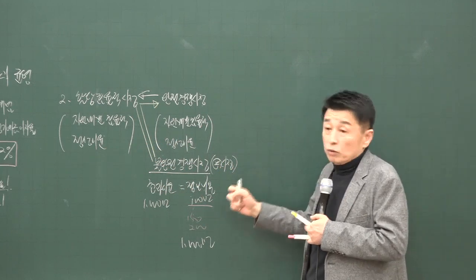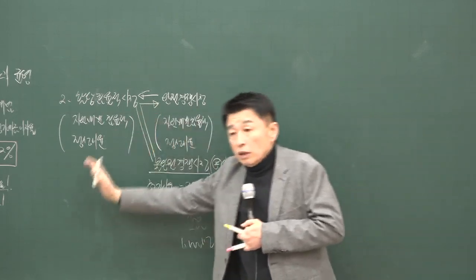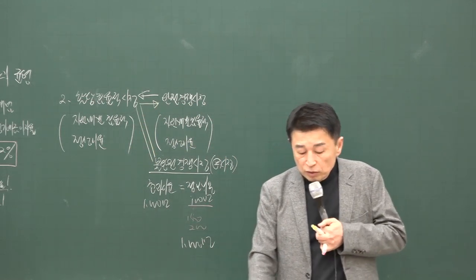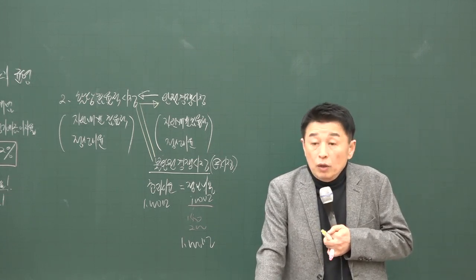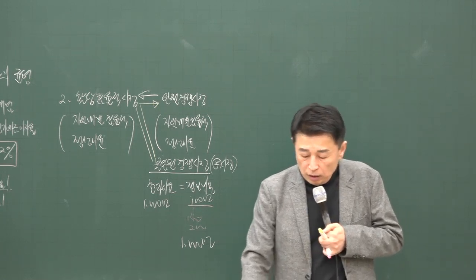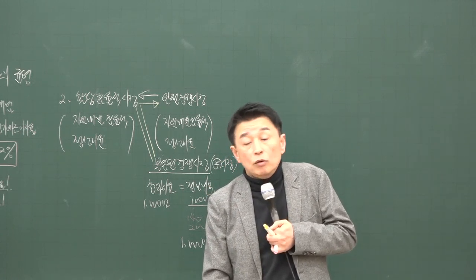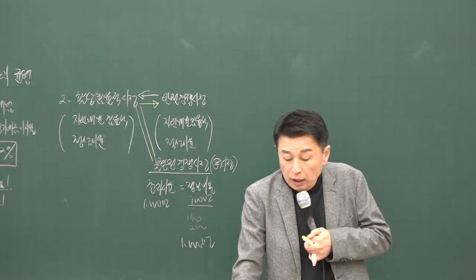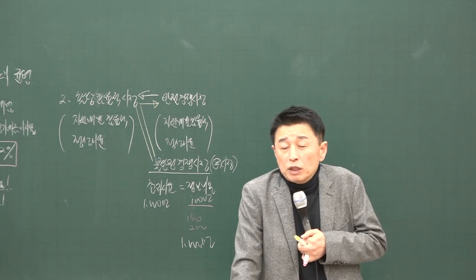시험에는 '불완전 경쟁 시장의 성격을 갖고 있는 부동산 시장은 할당 효율적 시장이 될 수 없다'고 해서 틀리게 출제된 적이 있어요. 부동산 시장도 할당 효율적 시장이 될 수 있다는 것이 맞는 내용입니다. 138페이지 할당 효율적 시장 1번에 보면, 할당 효율적 시장이 완전 경쟁 시장만을 의미하는 것은 아니고 불완전 경쟁 시장이나 독점 시장도 할당 효율적 시장이 될 수 있다고 되어 있어요. 139페이지 5번에 부동산 시장은 여러 가지 불완전한 요소가 많으나 할당 효율적 시장이 될 수 있다고 명시되어 있습니다.